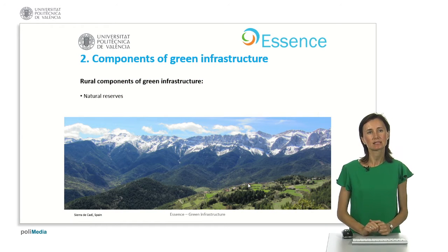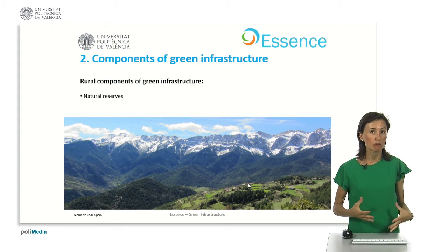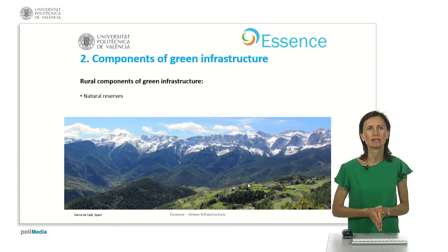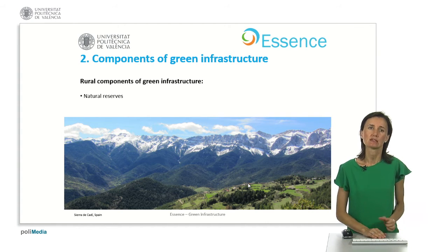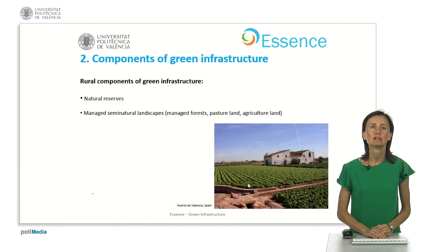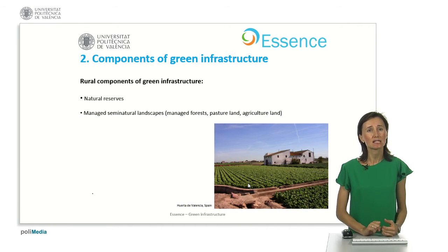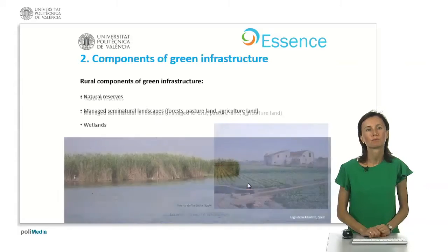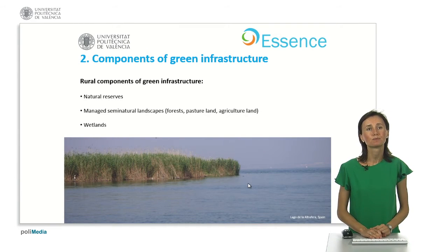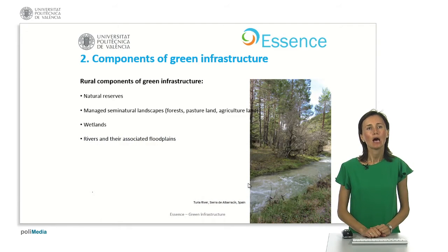What elements can compose the green infrastructure? First, the rural components of green infrastructure can be natural reserves or protected areas, managed semi-natural landscapes — which can be forests managed for resources or for recreational values — pasture land or agriculture land, wetlands, and rivers and their associated floodplains.